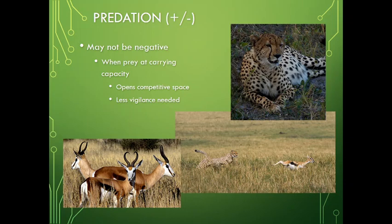Another thing to consider is that predation isn't always negative for the other party. It's certainly negative for the individual that gets eaten, but it may not be completely negative for the prey species in general. When prey are at carrying capacity, there's essentially no room for more individuals. Fewer babies are born. When an individual gets taken out of the population via predation, it opens up that competitive space.